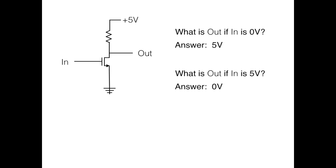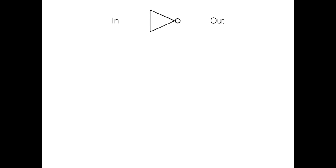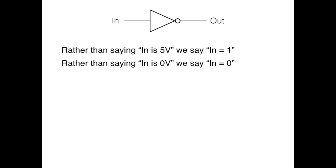This circuit has a special name and symbol — it's called an inverter, or a NOT gate. Rather than saying in is 5 volts, we say in equals 1, and rather than saying in is 0 volts, we say in equals 0. We'll use the symbols 1 and 0 instead of saying the voltage of the terminal. Now we'll make a truth table that completely depicts the operation of this gate: when in is 1, out is 0, and when in is 0, out is 1.